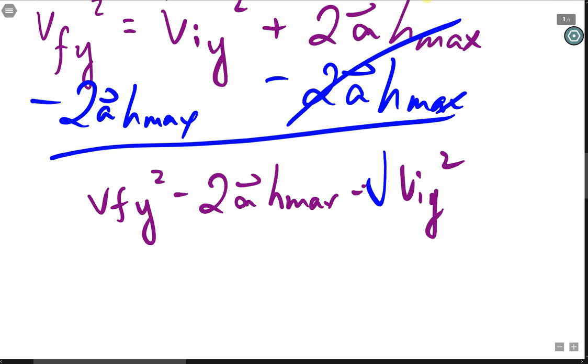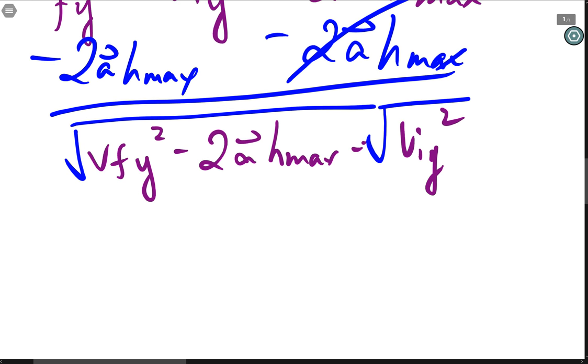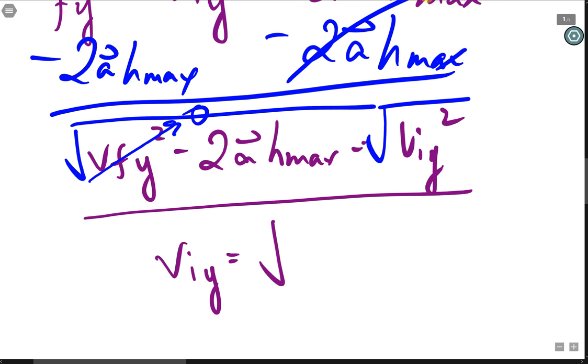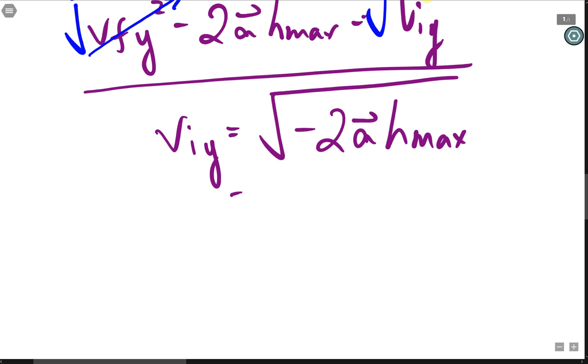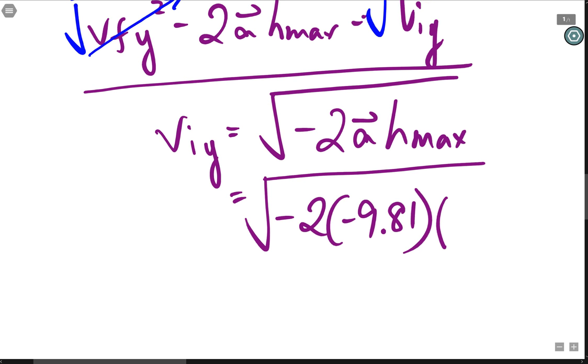Second, we're going to take the square root of both sides. And also, at the same time, we can deal with the vfy here because this one we know is zero. After this step, we are left with, I'm going to move viy squared to the other side, or in this case, viy being equal to the square root of negative 2a h max. Putting in our variables, we have the square root of negative 2, negative 9.81 for gravity, and for h max, 13 meters.